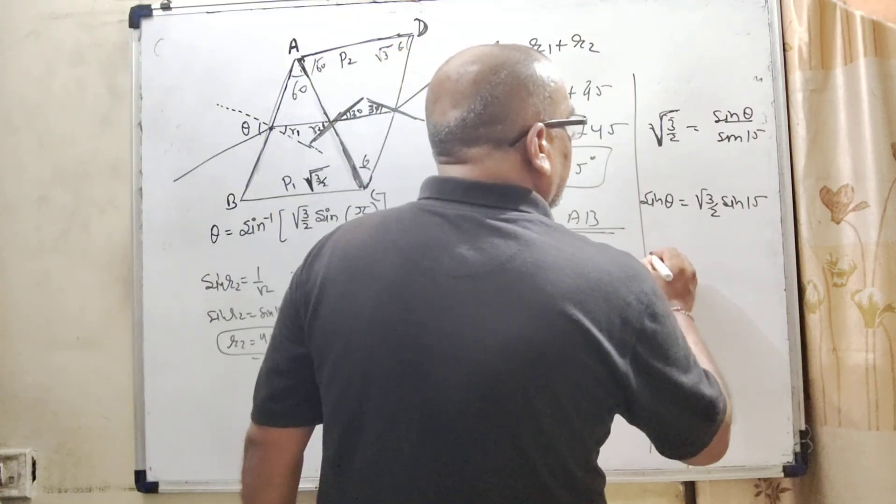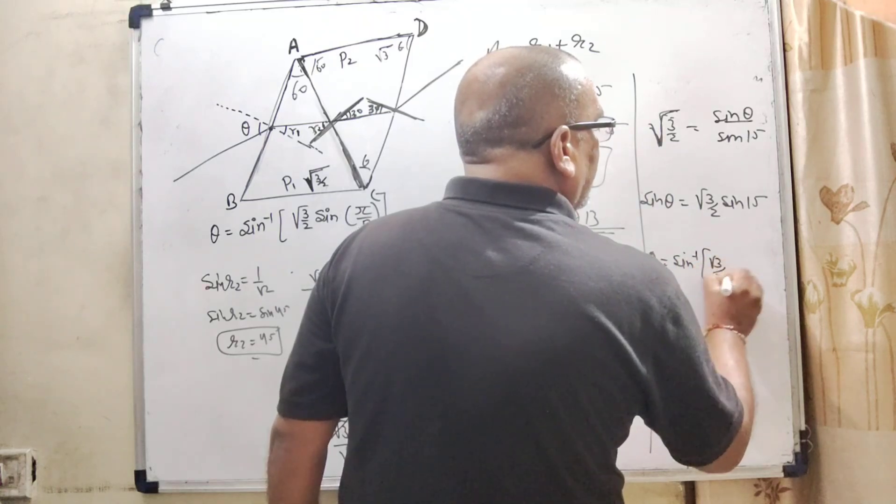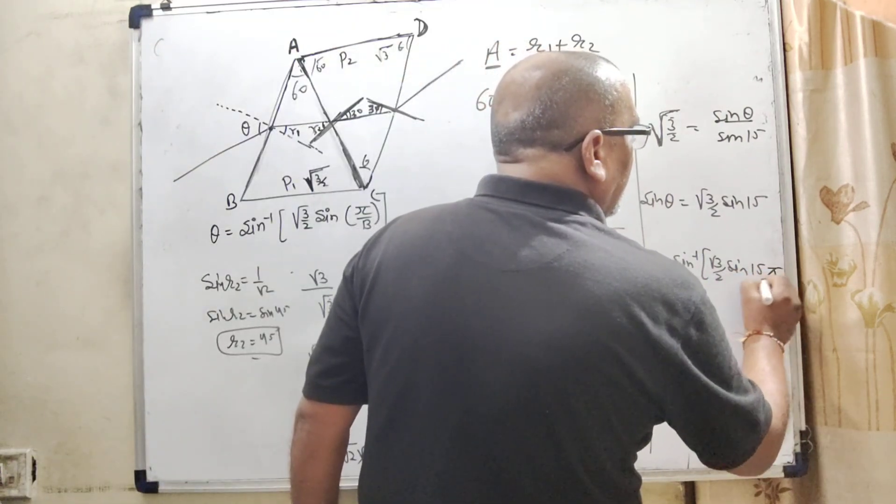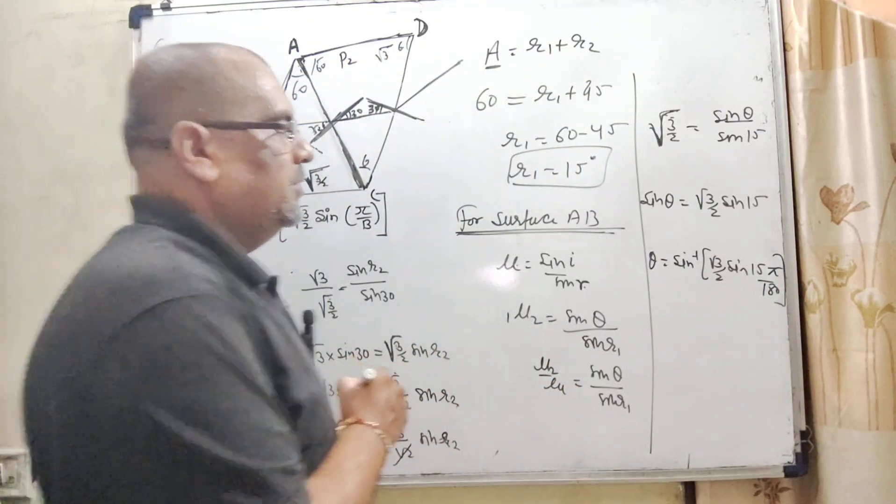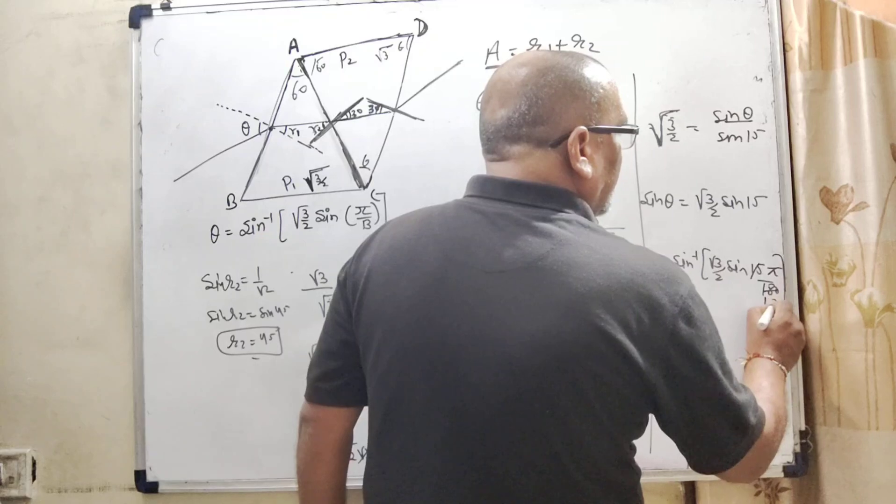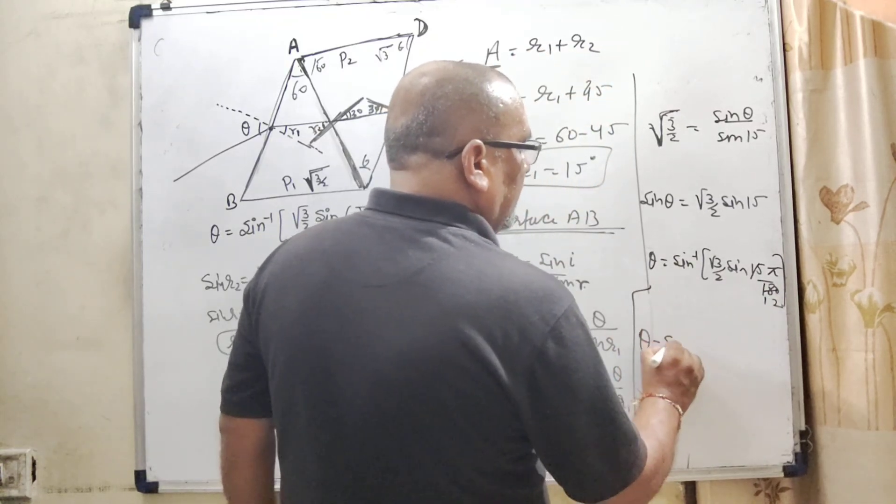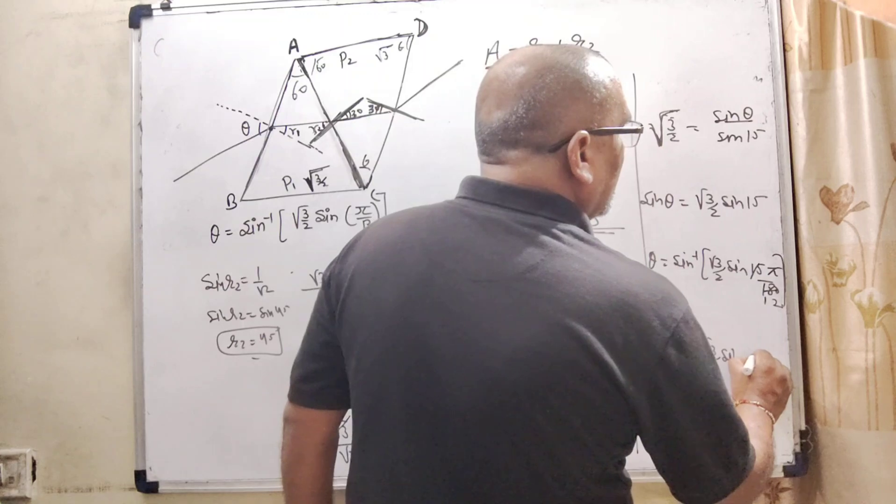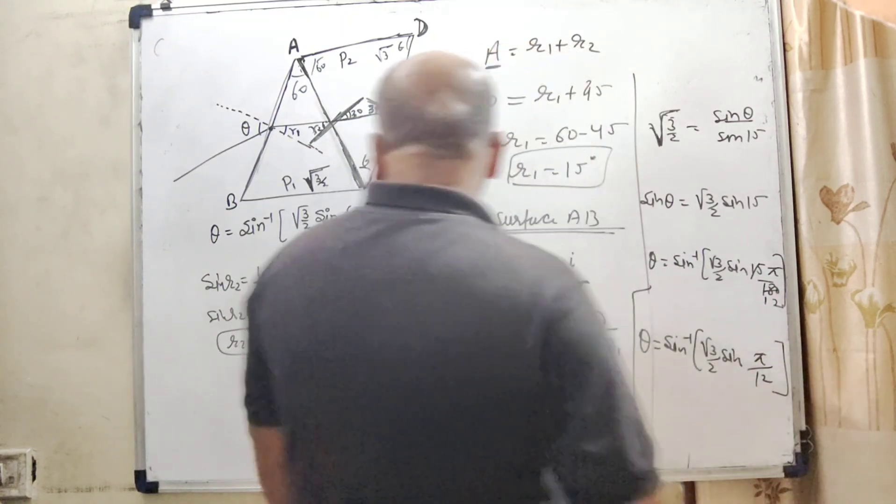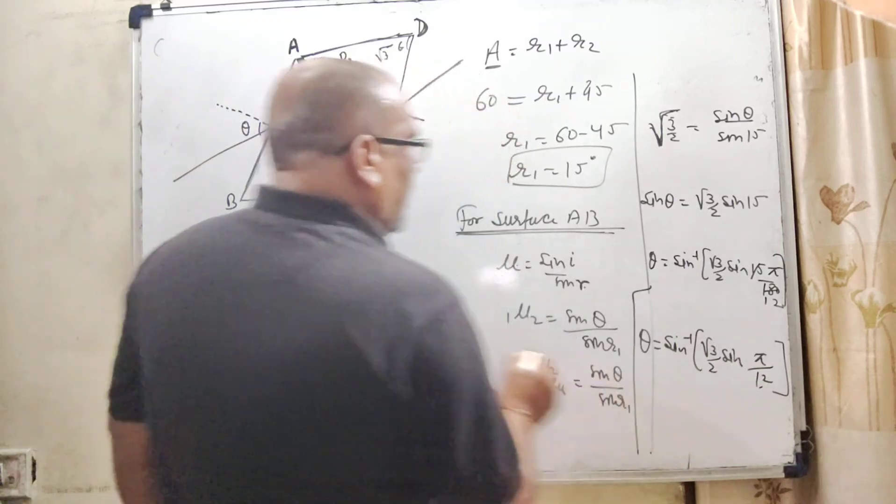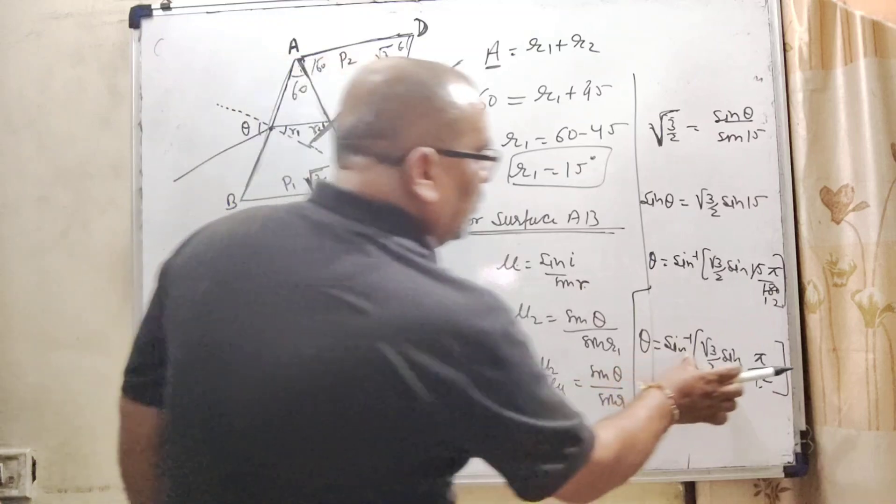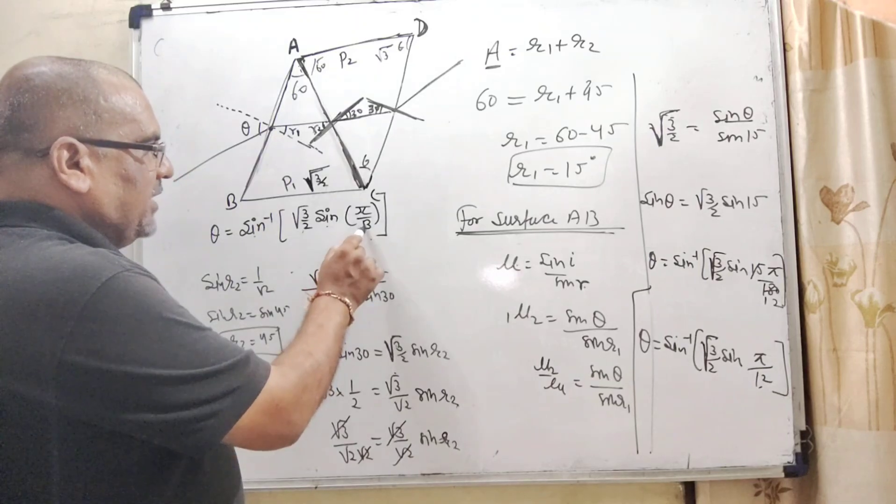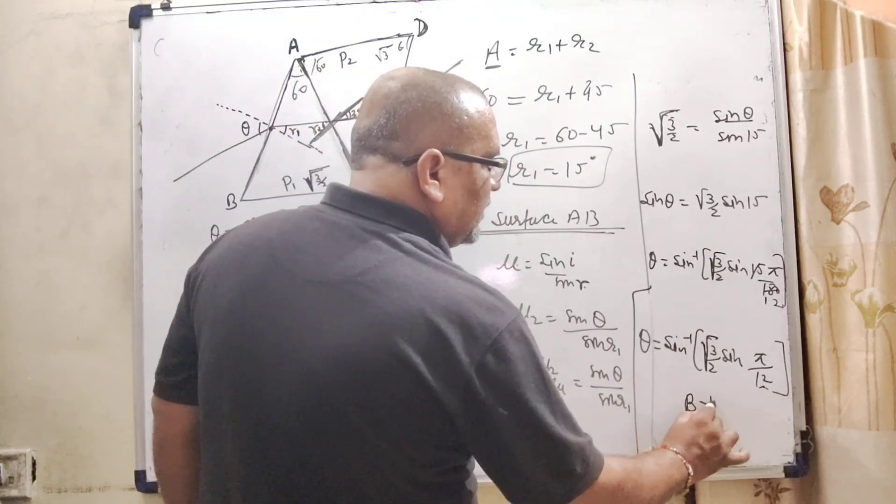And here theta is equal to sin inverse root 3 by 2 sin 15, can be written as convert into radian, that is pi by 180 degrees into radian. So 15, 15 into 30. Therefore theta is equal to sin inverse root 3 by 2 sin pi by 12. So let us see, by comparing sin inverse root 3 by 2 whole root and sin pi by beta, here beta in the place of beta is 12. So beta is equal to 12 is the correct answer.